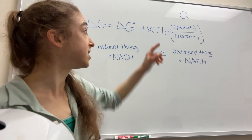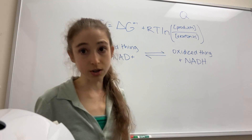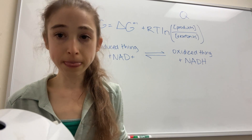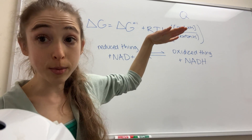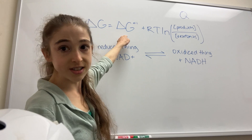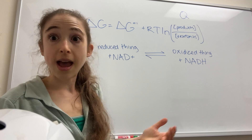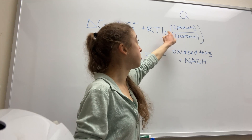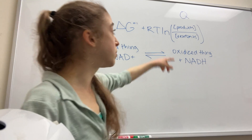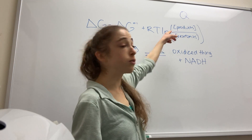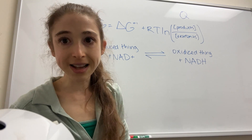We still need to think about the delta G-naught prime because it's going to come into the equation, but we also have to think about the ratio of products to reactants — that is our Q. If we want a negative delta G, if we want things to be favorable in the forward direction, we don't just want our delta G-naught prime to be negative, but we want the actual second part of the equation to be negative. The natural log of something that is less than 1 will give us a negative number, so we want this ratio to be less than 1. We want to have a lot of our reactants compared to products.